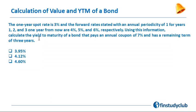Let's look at how we go about arriving at the value and YTM of a bond. Here we have an illustration. The 1-year spot rate is 3% and the forward rates stated with an annual periodicity of 1 for years 1, 2, 3 — one year from now — are 4%, 5%, and 6%.